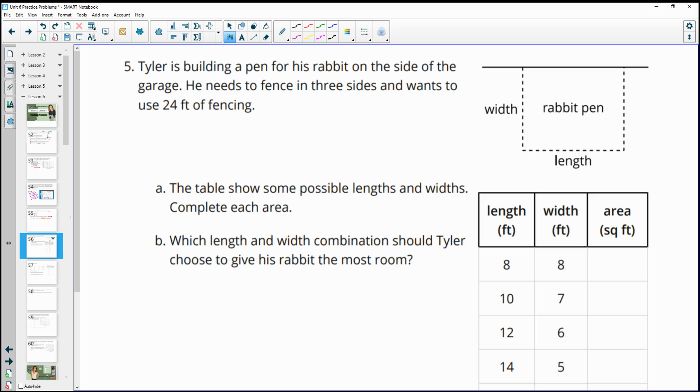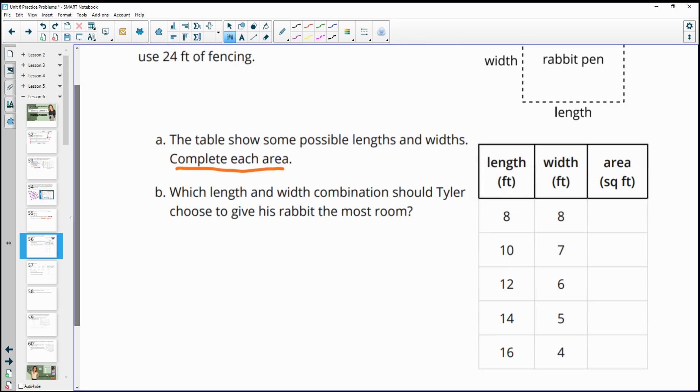Number five, Tyler is building a pen for his rabbit on the side of his garage. He needs to fence in three sides and wants to use 24 feet of fencing. The table shows some possible lengths and widths complete each area. So it's a rectangle, so we're just going to multiply these, right? So length times width for the area. So 8 times 8 is 64. 10 times 7 is 70. 12 times 6 is 72. 14 times 5 is 70. And 16 times 4 is 64. Which length and width combination should Tyler use or choose so that his rabbit has the most room, meaning the biggest area? So which one has the biggest area? That's 72. So he should use the 12 foot by 6 foot combination.